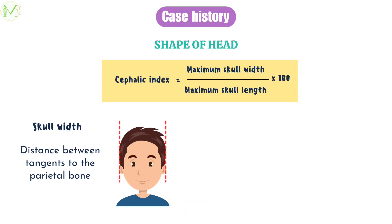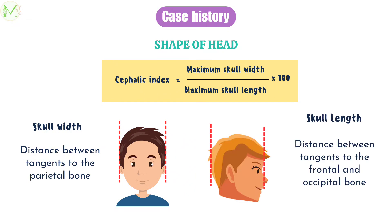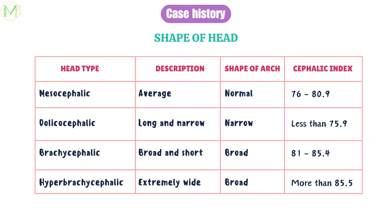The width of the skull is determined by the distance between tangents to the parietal bone. The length of the skull is determined by the distance between tangents to the frontal and occipital bone. Based on cephalic index values, the shape of the head is classified into four types: mesocephalic, dolicocephalic, brachycephalic and hyperbrachycephalic.